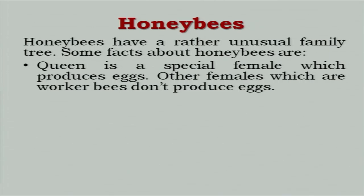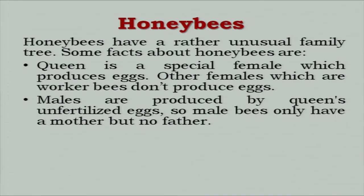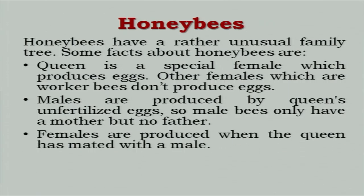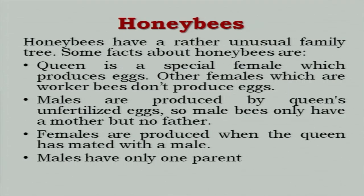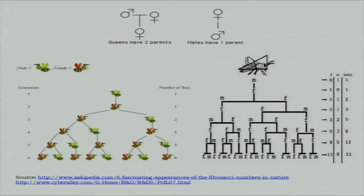In the diagram, green represents a male bee and red represents a female. A male has one parent, a female has two parents. Counting the number of bees per generation: generation 3 had 2 plus the ones above. Adding previous iterations gives the number of bees in each generation. This illustrates the Fibonacci series — also known as Virahanka numbers or Hemachandra series.